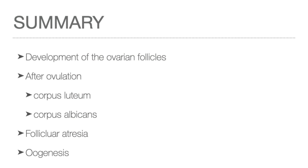This lecture discussed the development of ovarian follicles from before birth to ovulation. After ovulation, the corpus luteum develops from the ruptured Graafian follicle. If pregnancy does not occur, the corpus albicans develops. Follicular atresia, or degeneration of the ovarian follicles, occurs in all follicles that did not develop into the mature or Graafian follicle. Oogenesis, or the development of the female germ cell, was also covered, with emphasis on the two arrests in meiosis that an oocyte undergoes before completing maturation during fertilization.